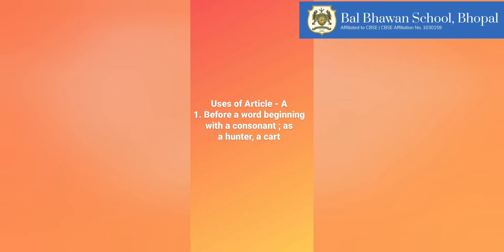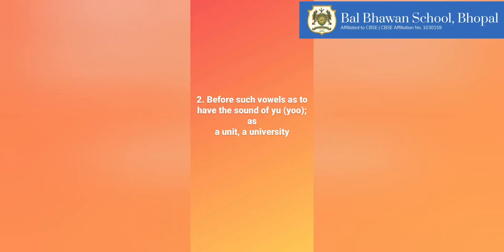'A' is also used before vowels that have the sound of 'you'. For example, we use: a unit, a university, a useful book, a union, a European.